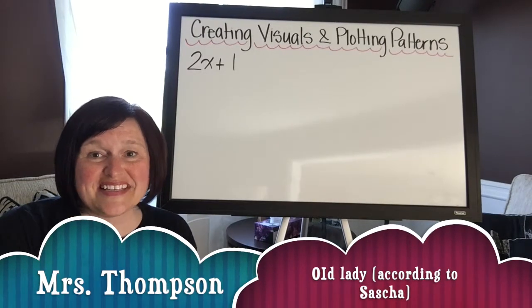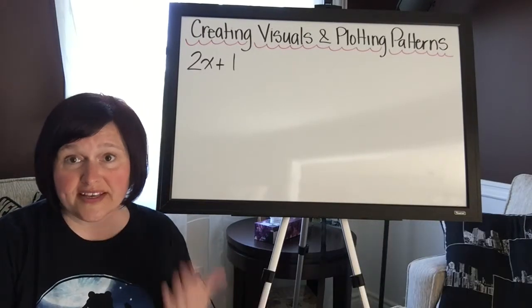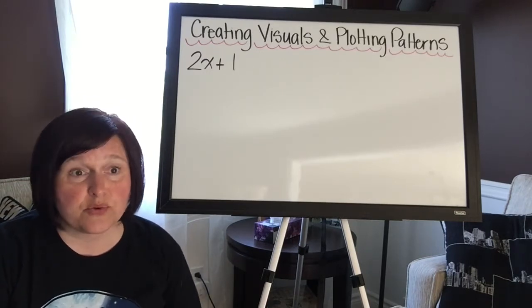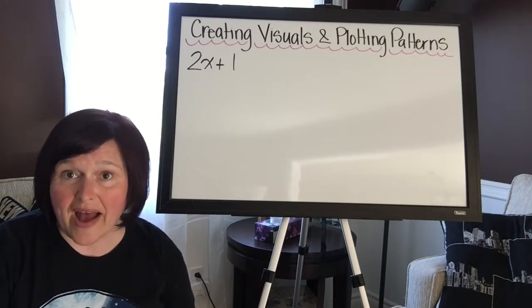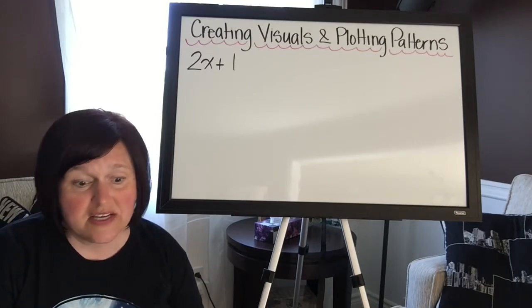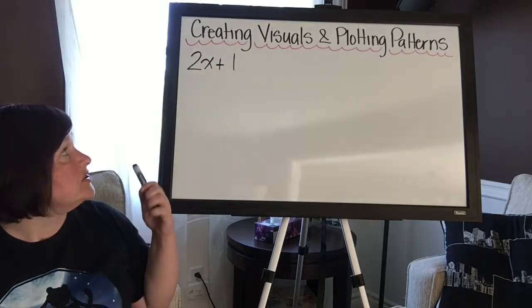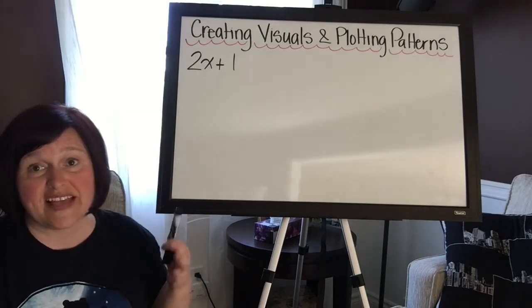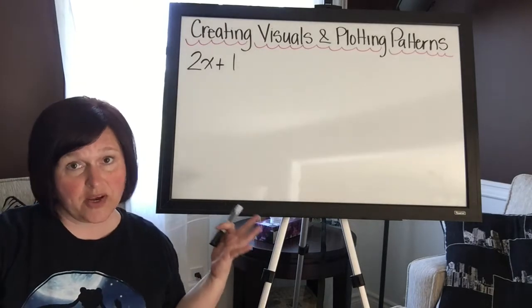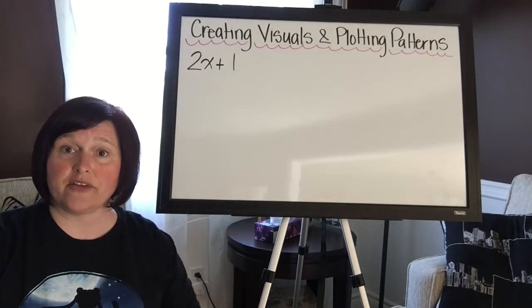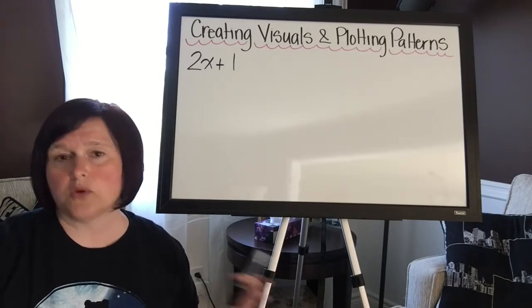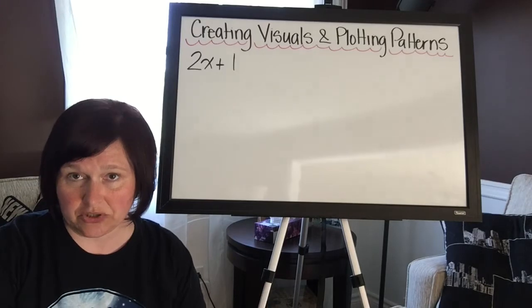Hi again. Okay, so we've been working through explicit patterning. We've done identification of explicit patterns through looking at a table of values, we have looked at graphs to determine explicit pattern rules, and we've also used visuals. Now today what we're going to do is we are going to create visuals and we are going to do the plotting of patterns. So instead of you just identifying, I'm going to give you the algebraic expression today and you are going to have to either create a visual from it or plot it on a graph depending on what question you're on and what I've asked you to do.